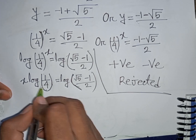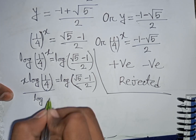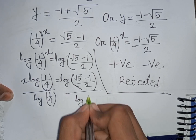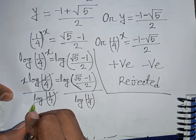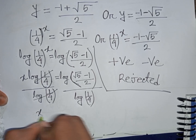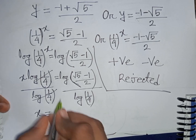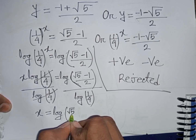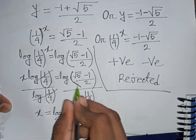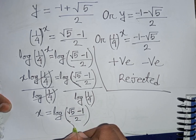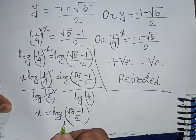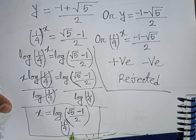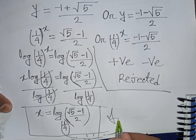We divide both sides by log(1/4) to isolate x. The log(1/4) terms cancel, giving us x equals log((sqrt(5) minus 1) / 2) divided by log(1/4). This is our final answer for the first problem.